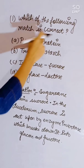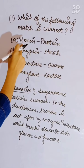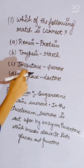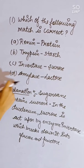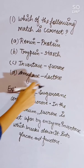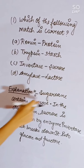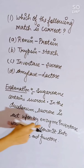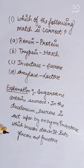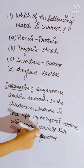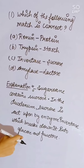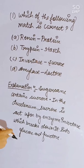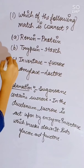Which of the following matches is correct? Options: renin-protein, trypsin-starch, invertase-sucrose, or amylase-lactose. Sucrose is acted upon by the enzyme invertase, which breaks it down into glucose and fructose. Correct answer is invertase-sucrose.